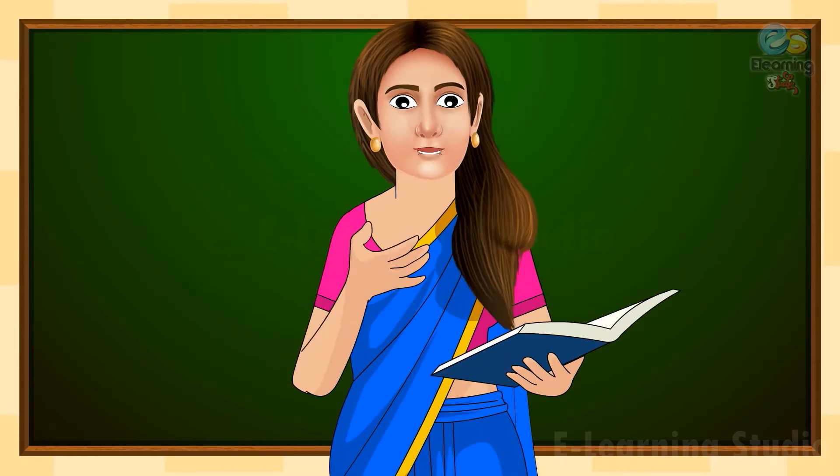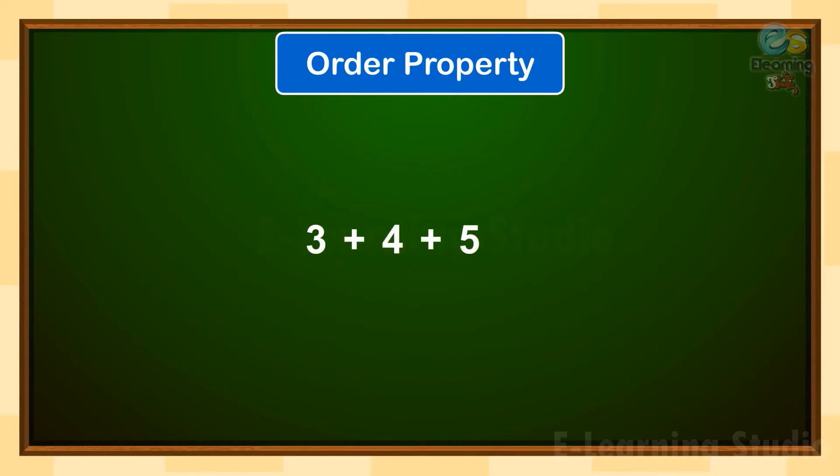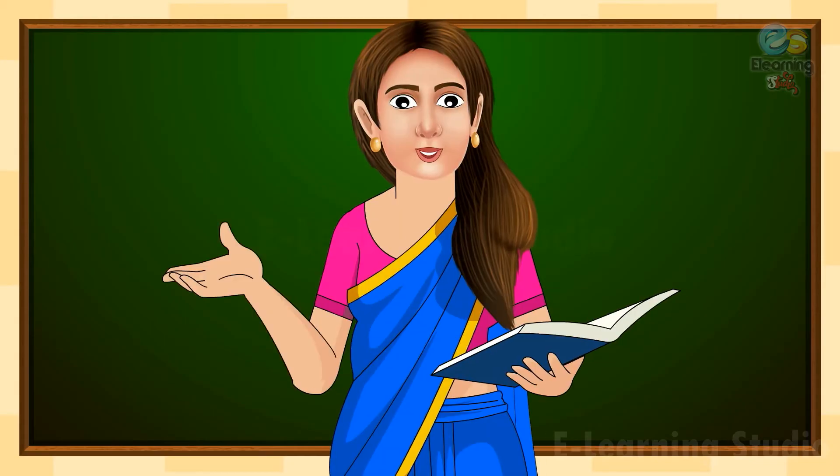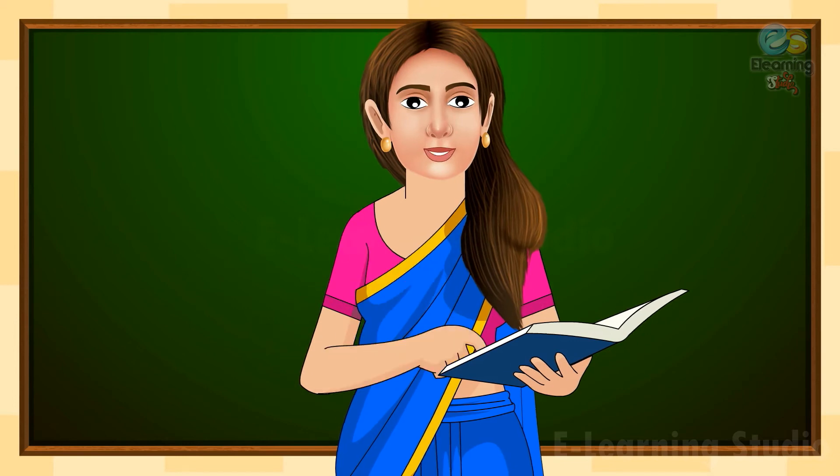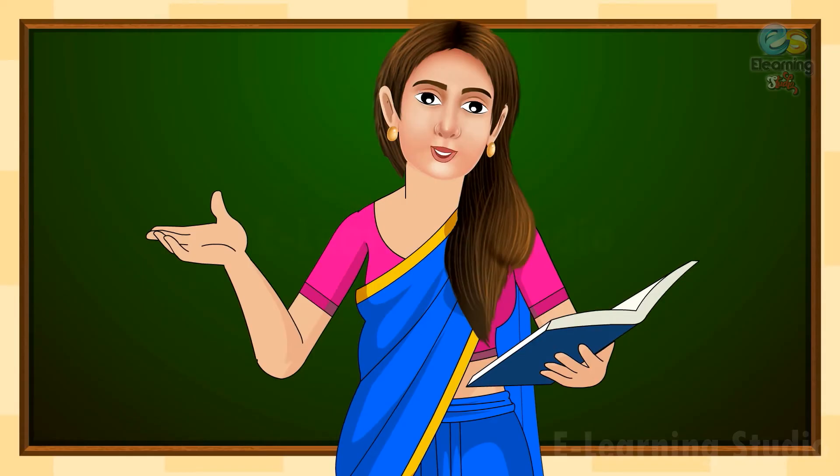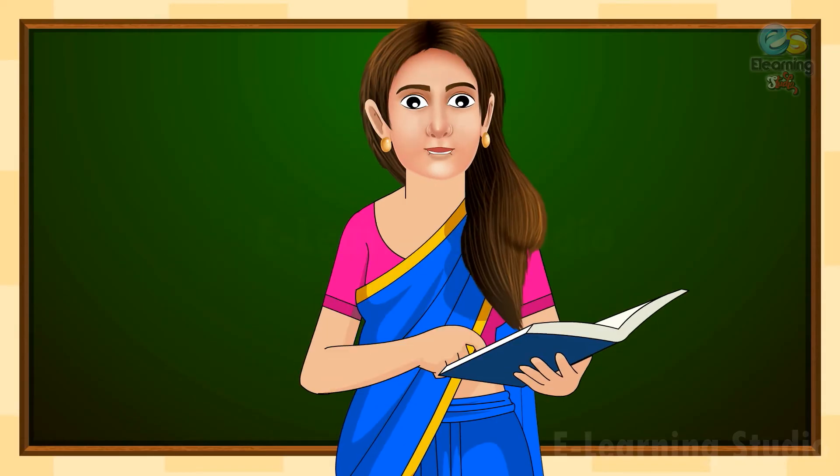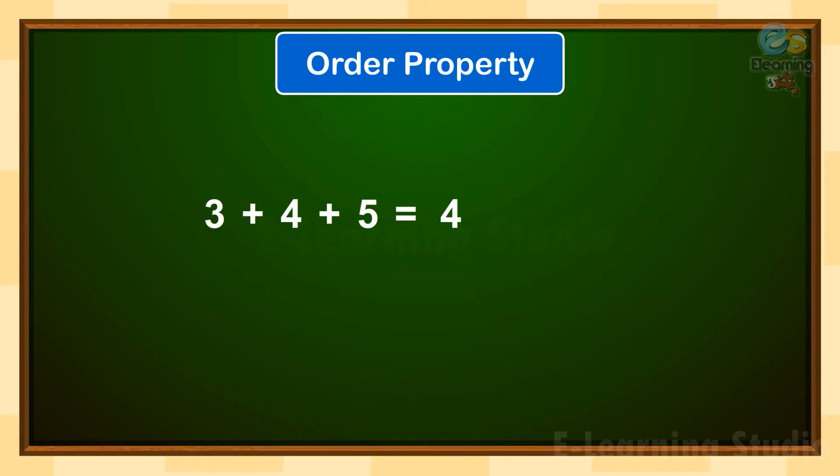Kids, the second example, we have 3 plus 4 plus 5 and we know that 3, 4, 5 are addends. So, in the Order Property, we are going to only change the order of the addends. 4 plus 5 plus 3 and 3 plus 4 plus 5 or 4 plus 5 plus 3 will give you the same sum which is 12.